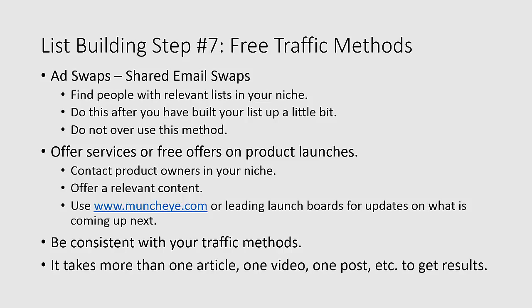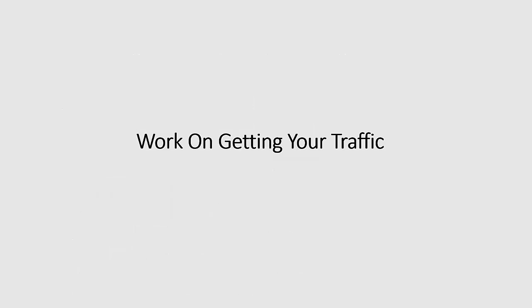Be consistent with your traffic methods — it takes more than one article, more than one video, more than one blog post, more than one press release. Those who have success might have 10 to 20 really good articles or 20 to 30 videos out there. It's going to slowly build up to where you have sustainable traffic. Traffic is a process you should never stop — that's the only way to keep getting sustainable and passive income. Now get out there, start working on getting traffic, and once you scale this up you can eventually move into paid traffic solutions.